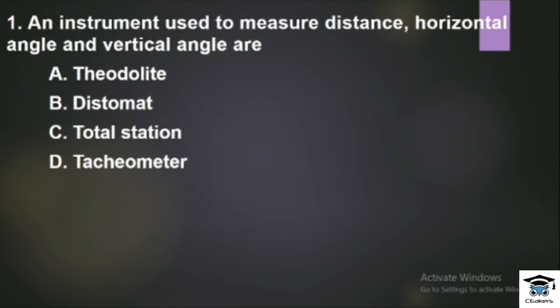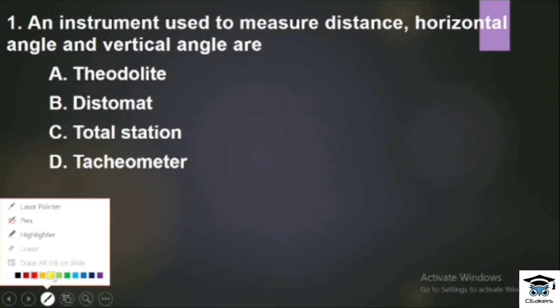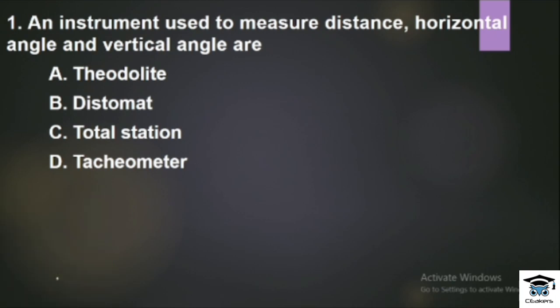First question: An instrument used to measure distance, horizontal angle and vertical angle. We can measure distance, horizontal angle and vertical angle — and that is the total station. Total station means we use distance measurements along with horizontal angle and vertical angle.